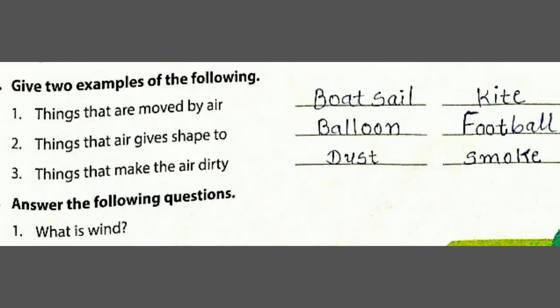Then: give two examples of the following. First: things that are moved by air — boat sail and kite. Second: things that air gives shape to — balloon and football. Third: things that make the air dirty — dust, smoke, and germs.